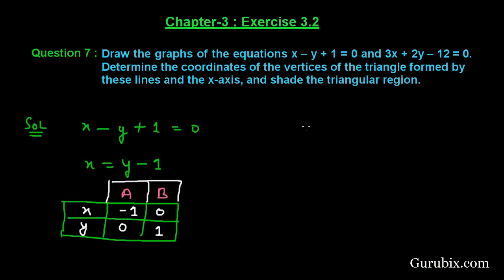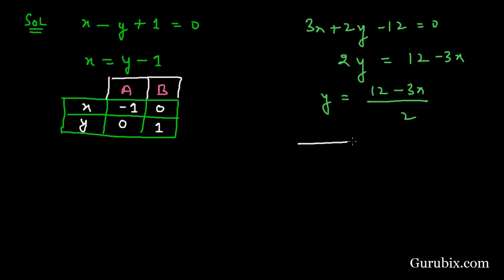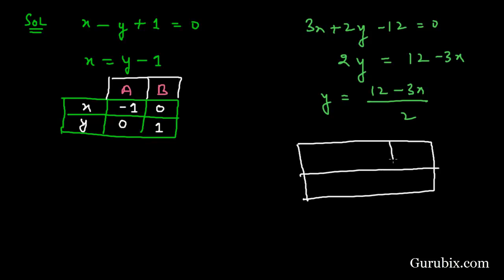Now we write the second equation: 3x plus 2y minus 12 equals to 0, and express y in terms of x. Rearranging: 2y equals 12 minus 3x, so y equals (12 minus 3x) over 2. Drawing a table: if x equals 0, then y equals 6; if x equals 2, then y equals 3. We call these point P at (0, 6) and point Q at (2, 3).